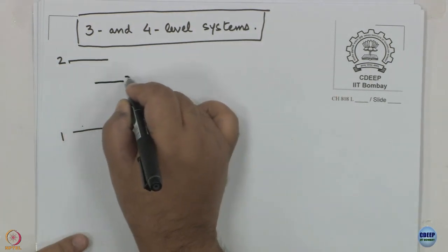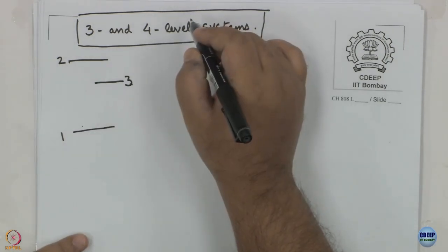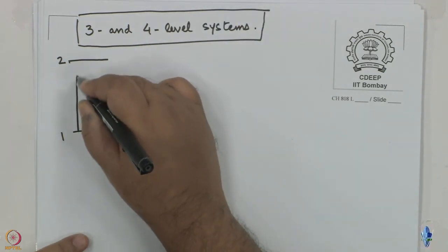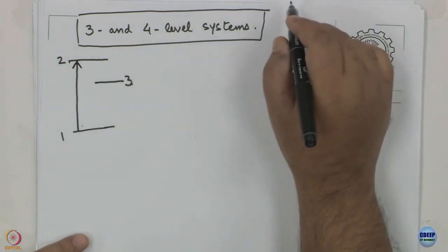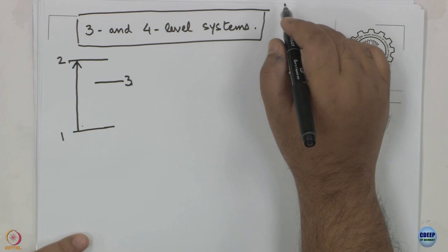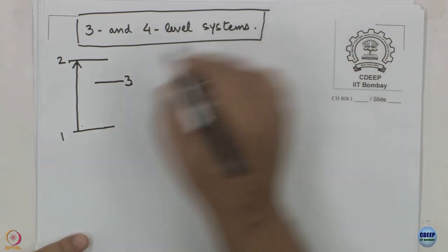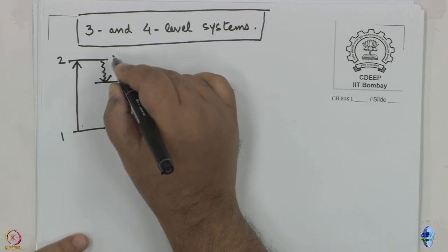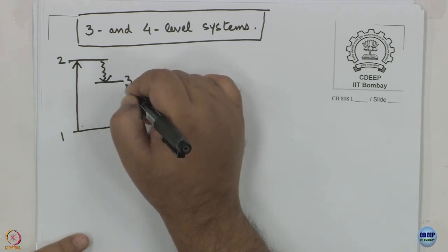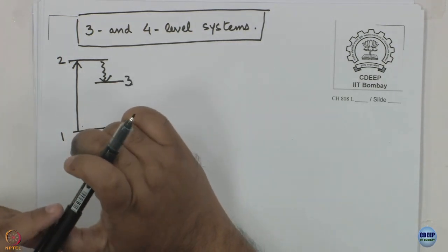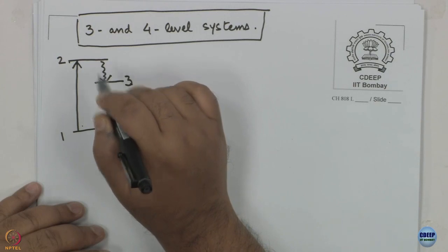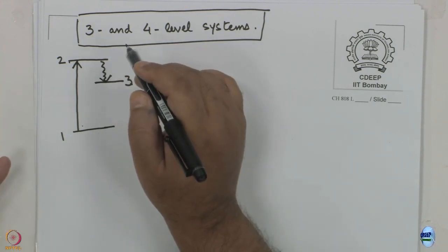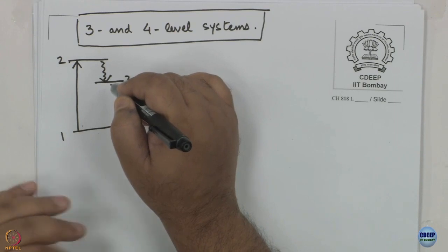What about a three-level system? Suppose I have another energy level three. The situation is that you promote the molecule from energy level one to energy level two, and there is some efficient non-radiative relaxation pathway that quickly brings the system down to level number three. If you read textbooks on lasers, in many cases they use a radiative pathway from two to three — the only condition is that it has to be fast.